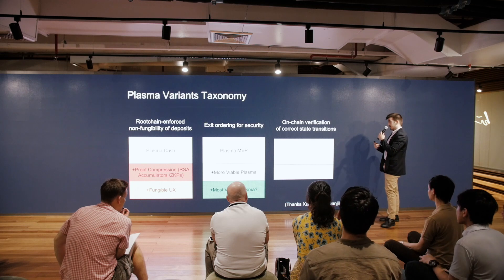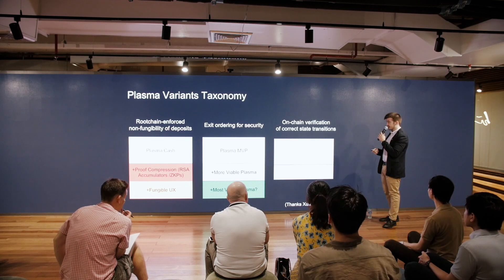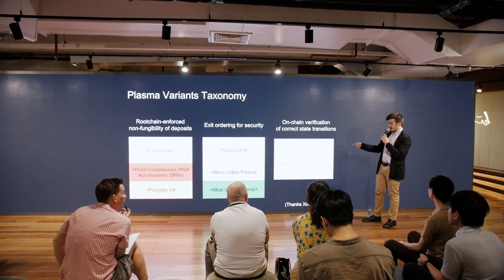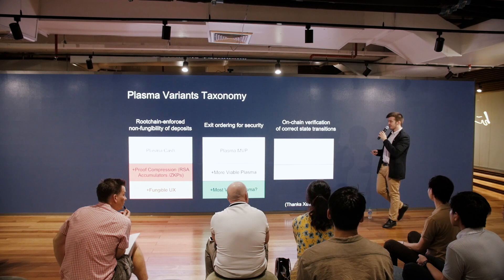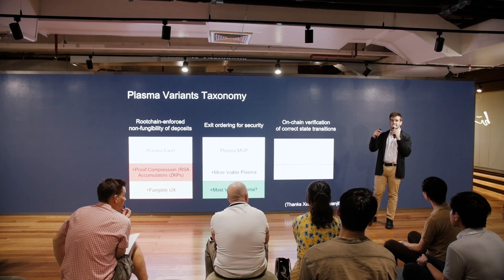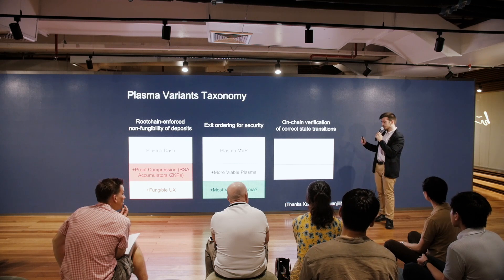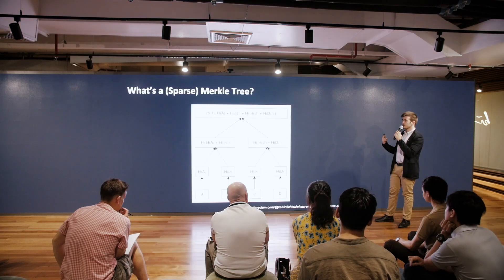There's also a plasma variant using zero-knowledge SNARKs, which uses ZK proofs to verify that every state transition is valid. We're not fully sure about this one — it's pretty complex.